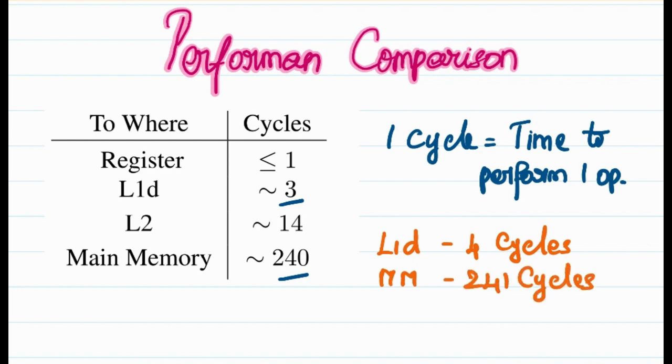By this number, you can see the difference. So if the data is present in L1 cache instead of main memory, you are going to get 80 times performance improvement.